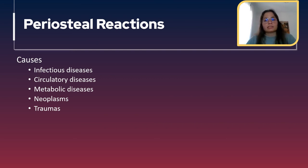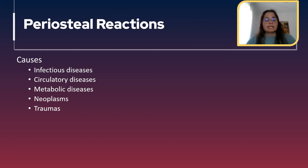Periosteal reactions can be caused by infectious, circulatory and metabolic diseases, neoplasms, and traumas. When we find periosteal reactions, we can say if the disease was active or not at the time of death, and maybe say something about possible causes taking into consideration the distribution of the lesions.